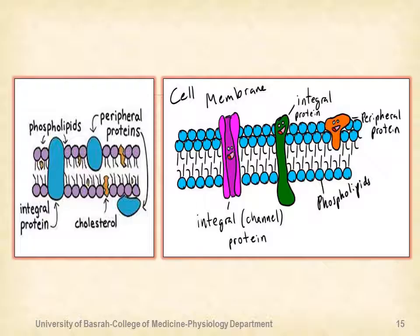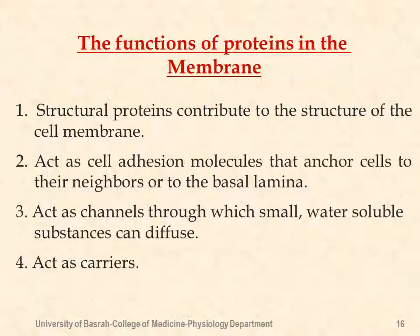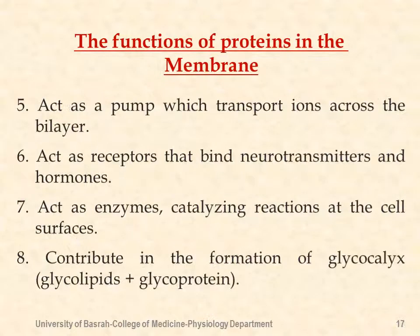This picture shows the composition of the cell membrane and the locations of its components. The functions of proteins in the membrane include: structural proteins that contribute to building the cell membrane; cell adhesion molecules that anchor cells to neighboring cells or the basal lamina; channels through which small water-soluble substances can diffuse; carrier proteins; pumps that transport ions across the cell; and receptors that bind neurotransmitters, hormones, and drugs. Proteins also act as enzymes.